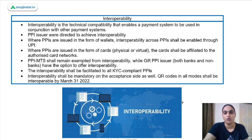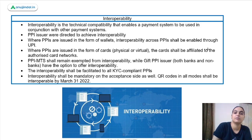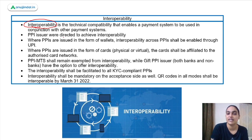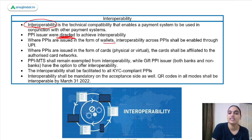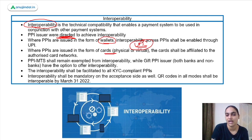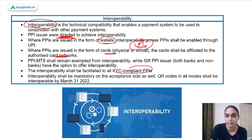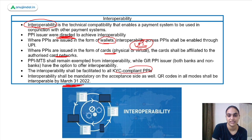Talking about interoperability — it is the technical compatibility which enables a payment system to be used in conjunction with other payment systems. PPI issuers were directed to achieve interoperability. For wallet-form PPIs, interoperability is possible through UPI. For card-form PPIs, card networks provide interoperability. Interoperability is mandatory for KYC-compliant PPIs and should be operational by next year. QR codes should also ensure interoperability. For gift PPIs, interoperability must be offered, but mass transit systems are exempted.